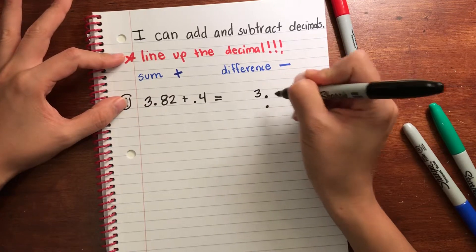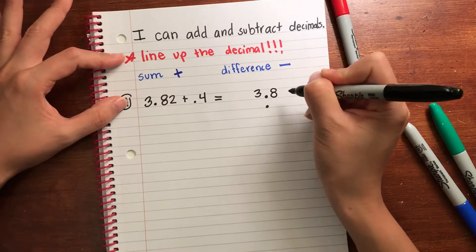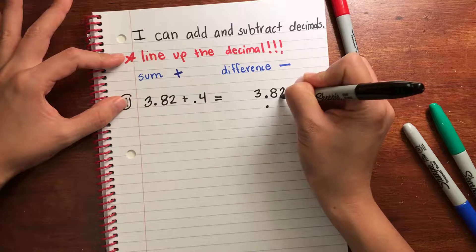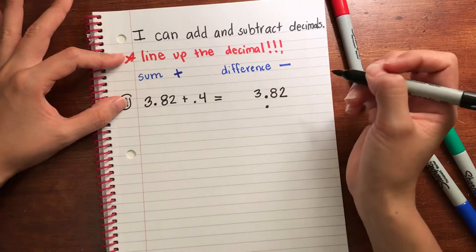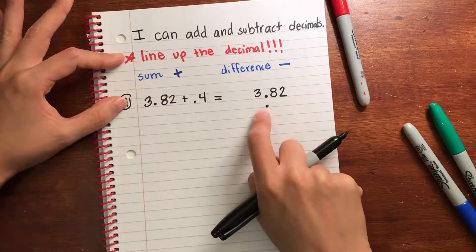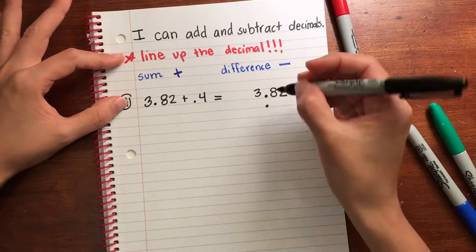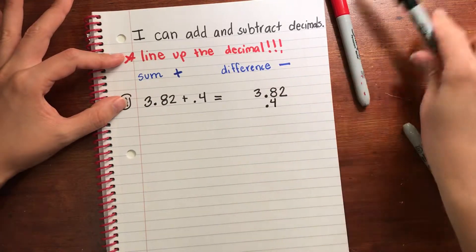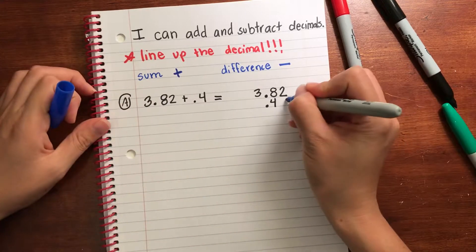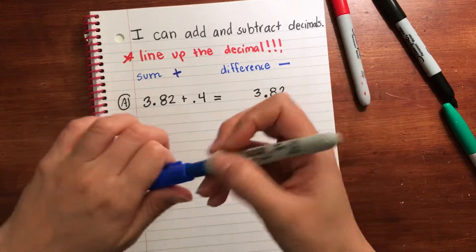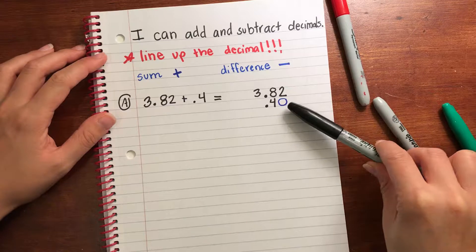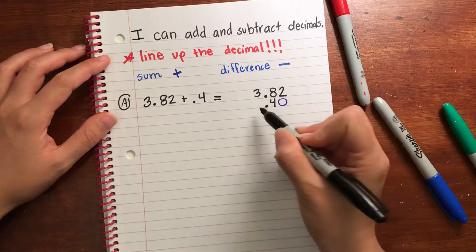Three in the ones, three ones. Eight tenths, two hundredths. My four tenths does not go here, it doesn't go here, it goes here because this is the tenth spot. And we know, just to make it easier to add and subtract, we can add a zero here because four tenths is the same thing as forty hundredths.